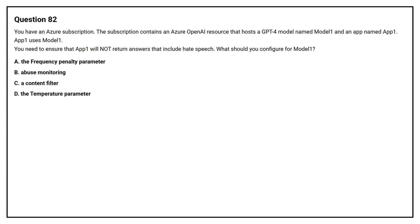Option A: the frequency penalty parameter. Option B: abuse monitoring. Option C: a content filter. Option D: the temperature parameter. The correct answer is Option C, a content filter.